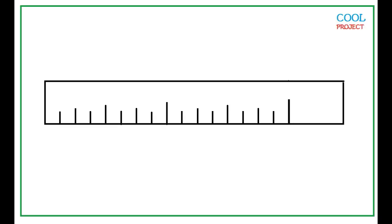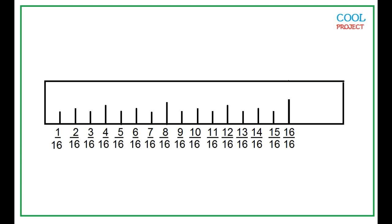1 inch of a ruler is divided into 16 equal parts. The first mark from zero is equivalent to 1 over 16. The next is 2 over 16, and so on.